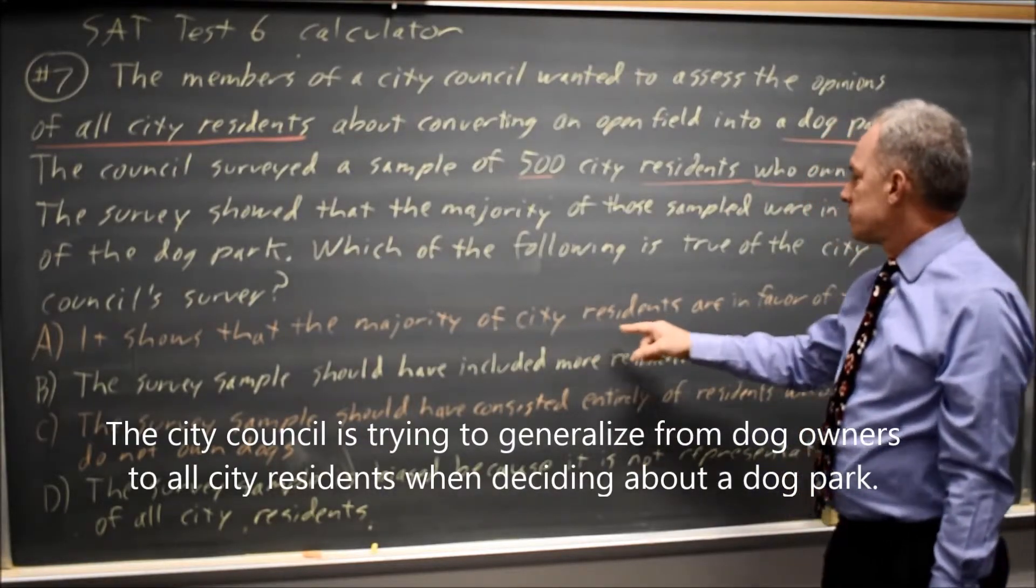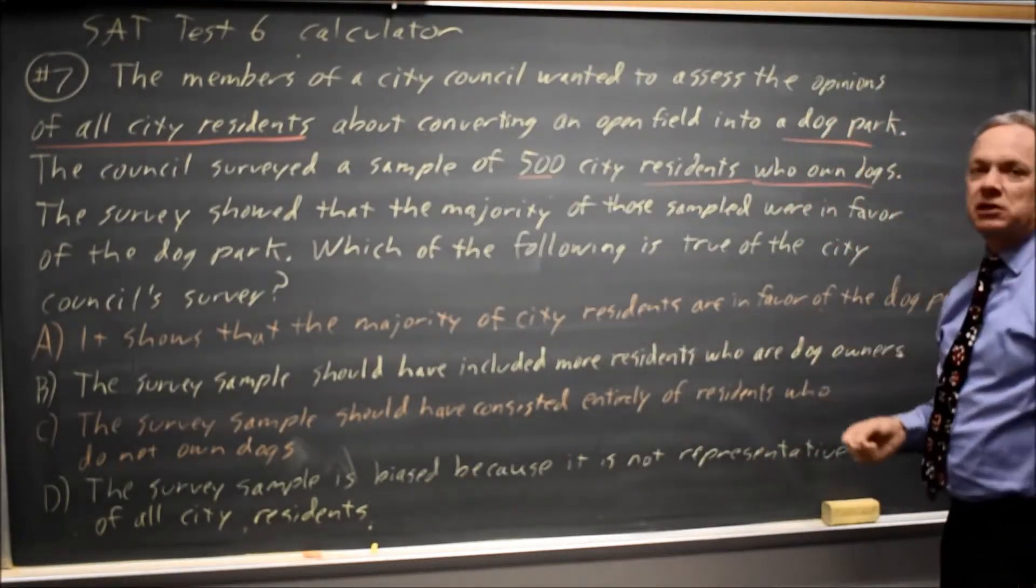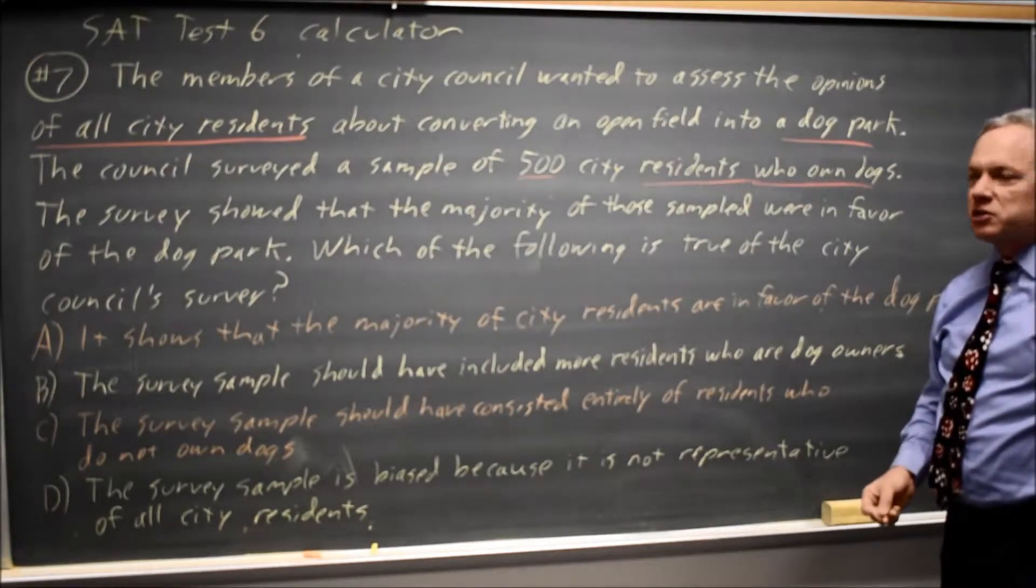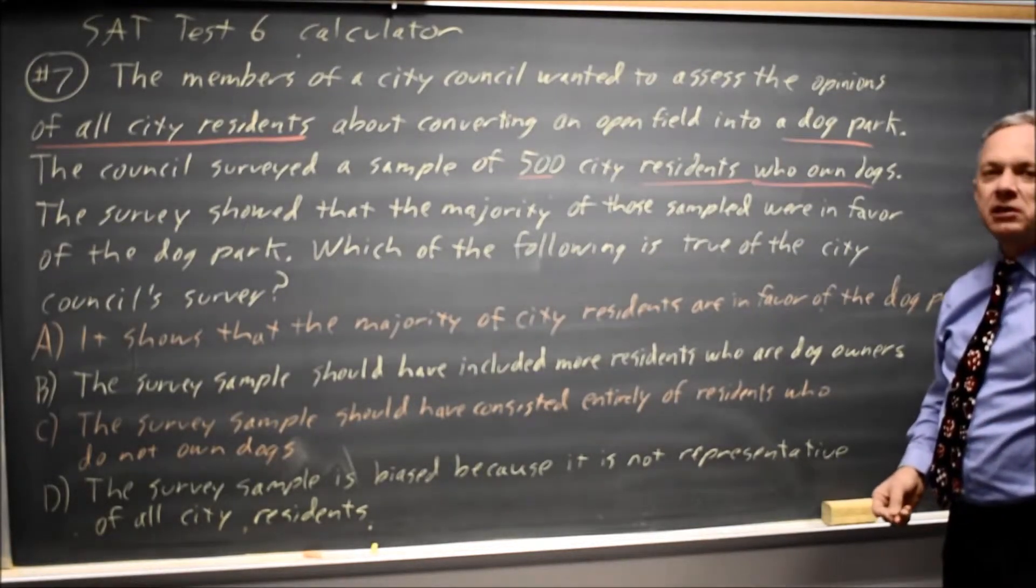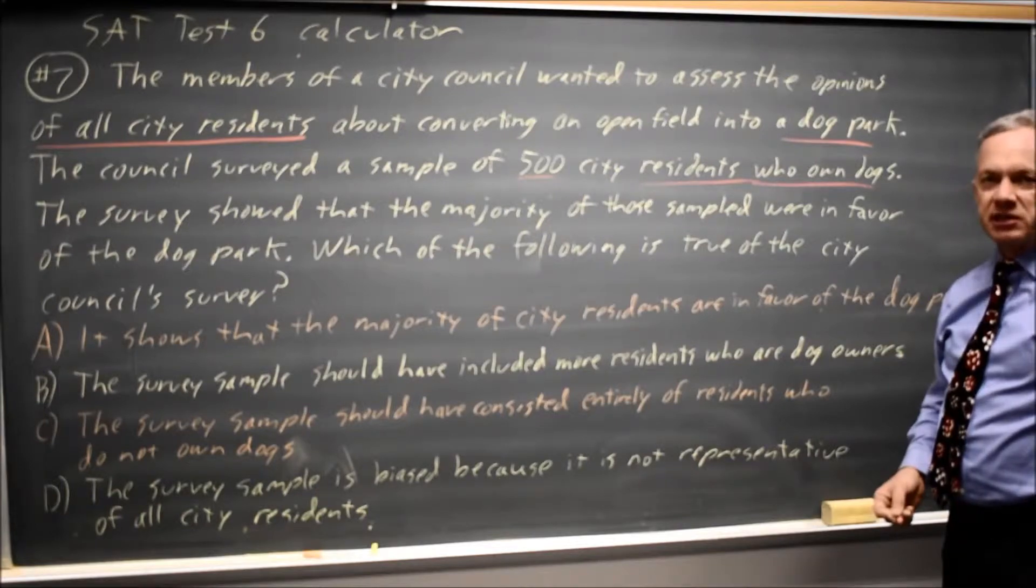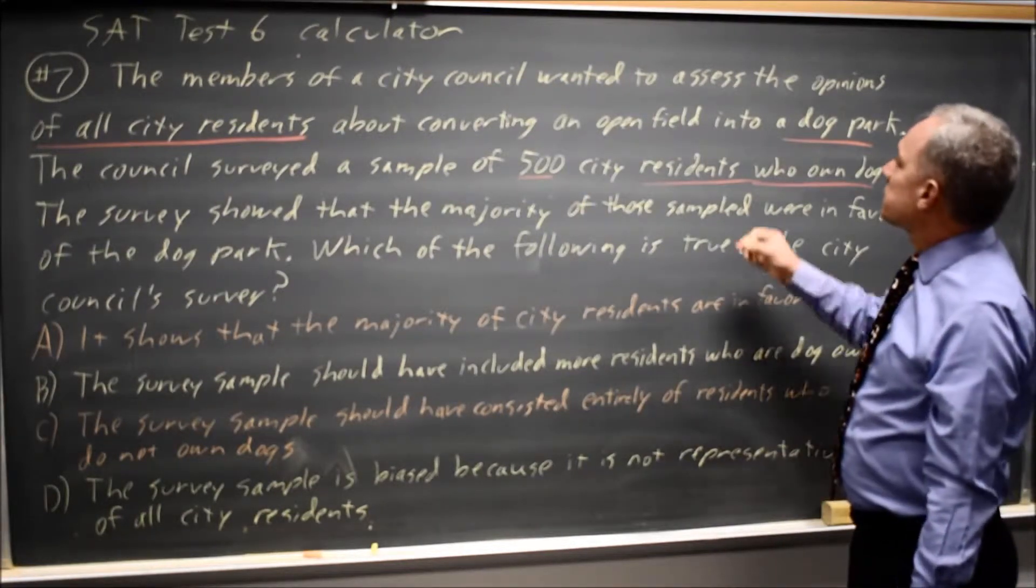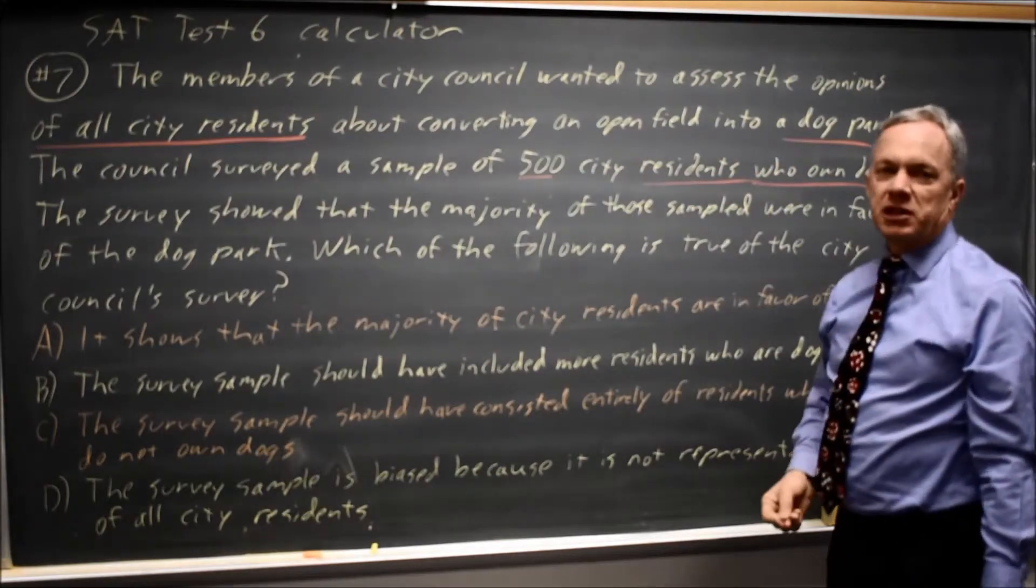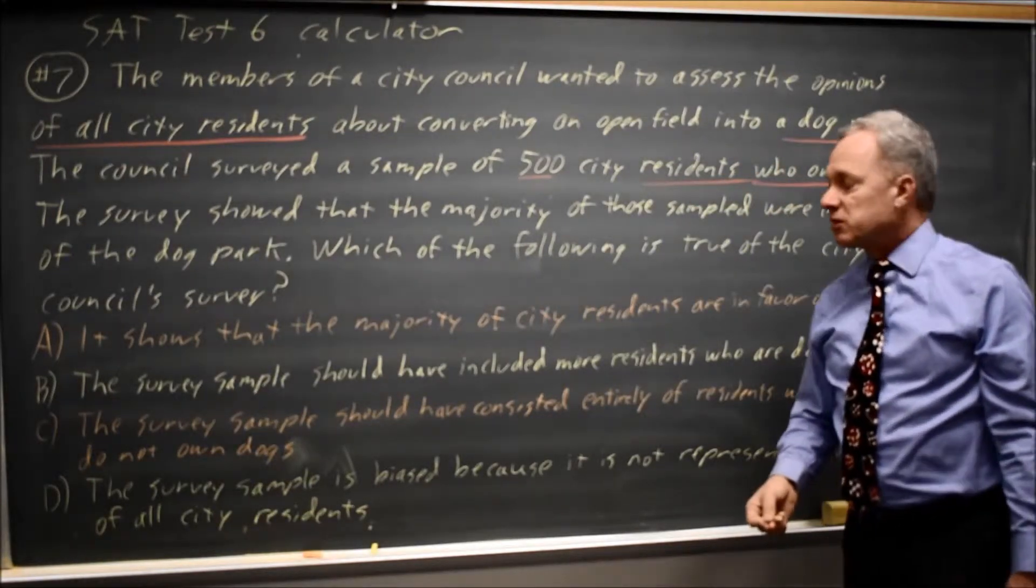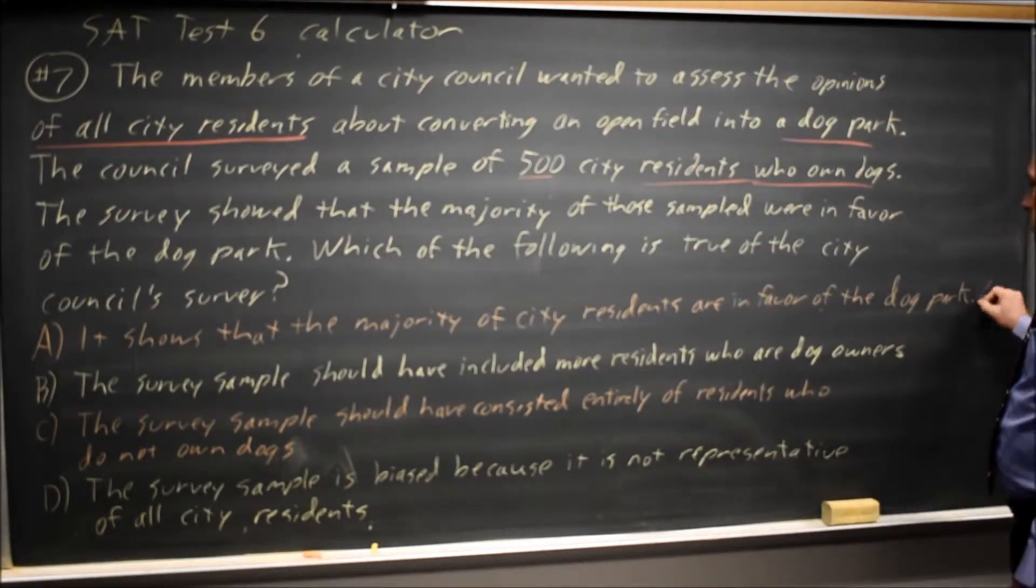Choice A: It shows that the majority of city residents are in favor of the dog park. Since the survey only included dog owners, it cannot be generalized to all city residents. It's quite reasonable to suspect that dog owners are more sympathetic to a dog park than the average city resident. So choice A is not correct.